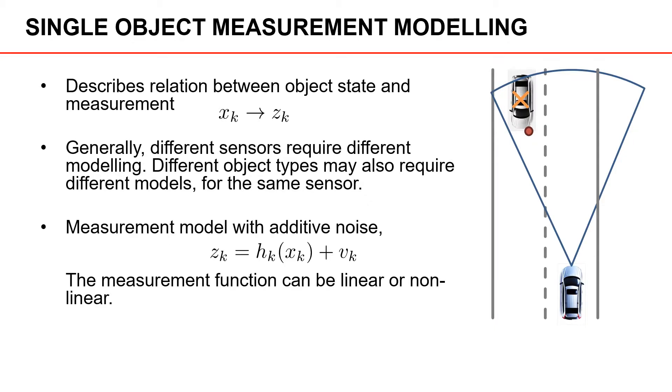Similarly to the motion modeling, the measurement models typically include additive noise. So the measurement Z at time K is some function H that takes the object state as input, and then we have additive noise. And this measurement function H can be either linear or non-linear. We can also use this to define a so-called measurement likelihood, a density for the measurement Z at time K given the object state at time K.